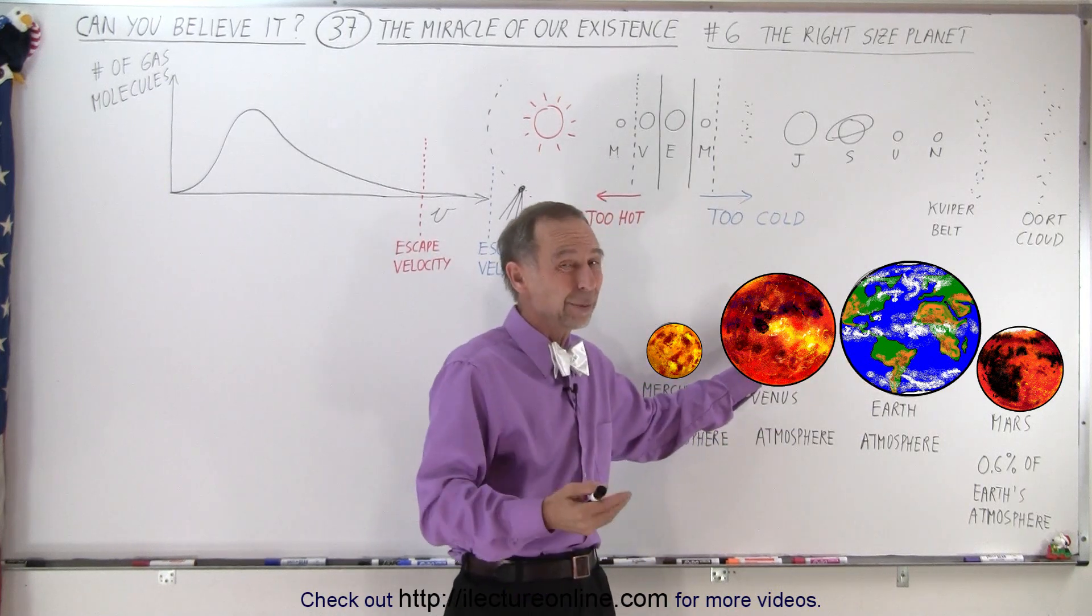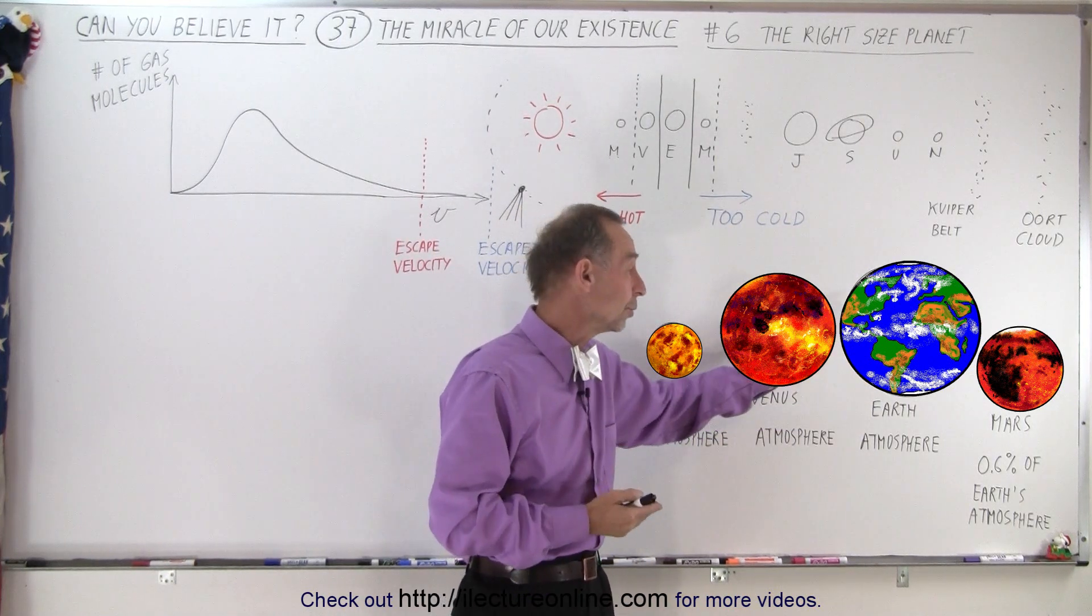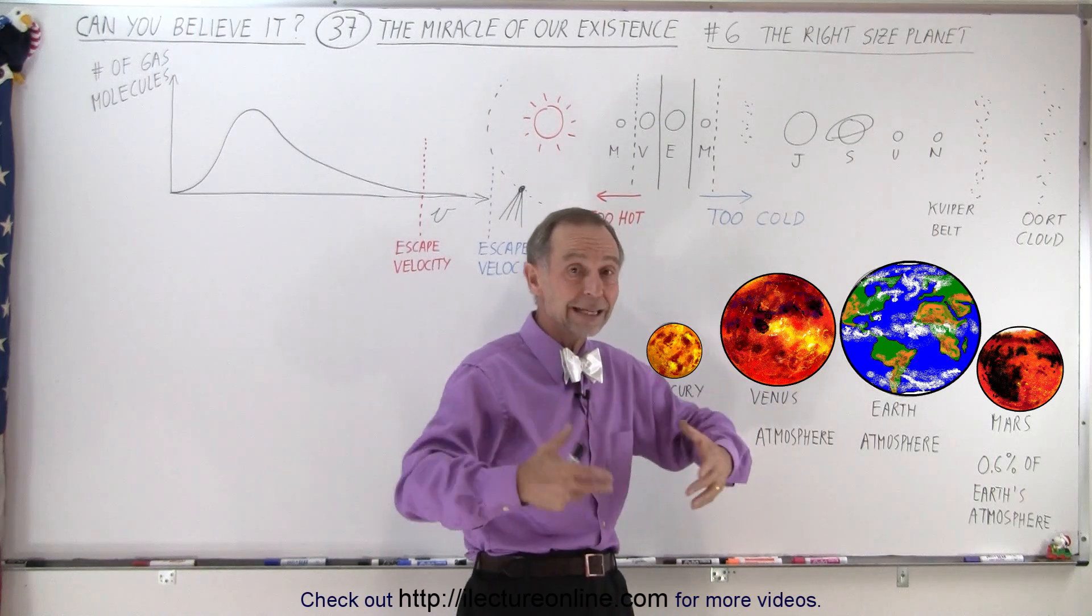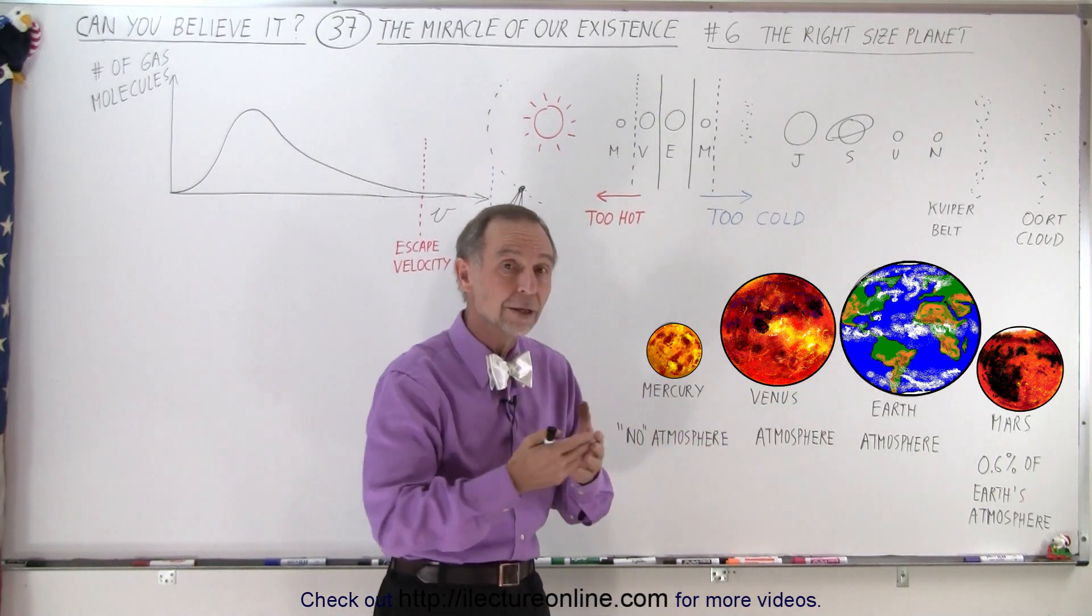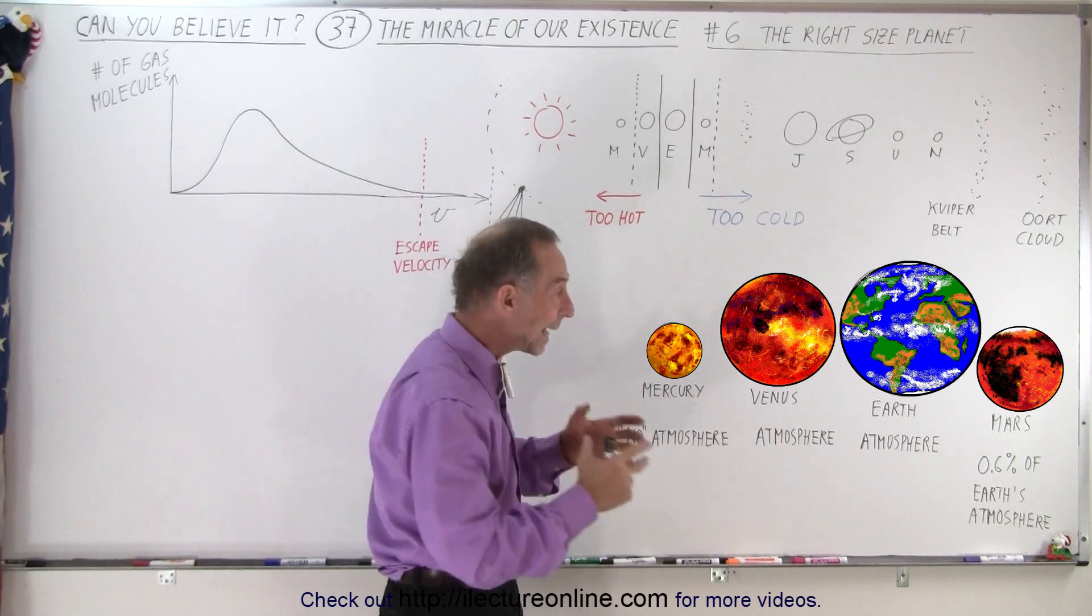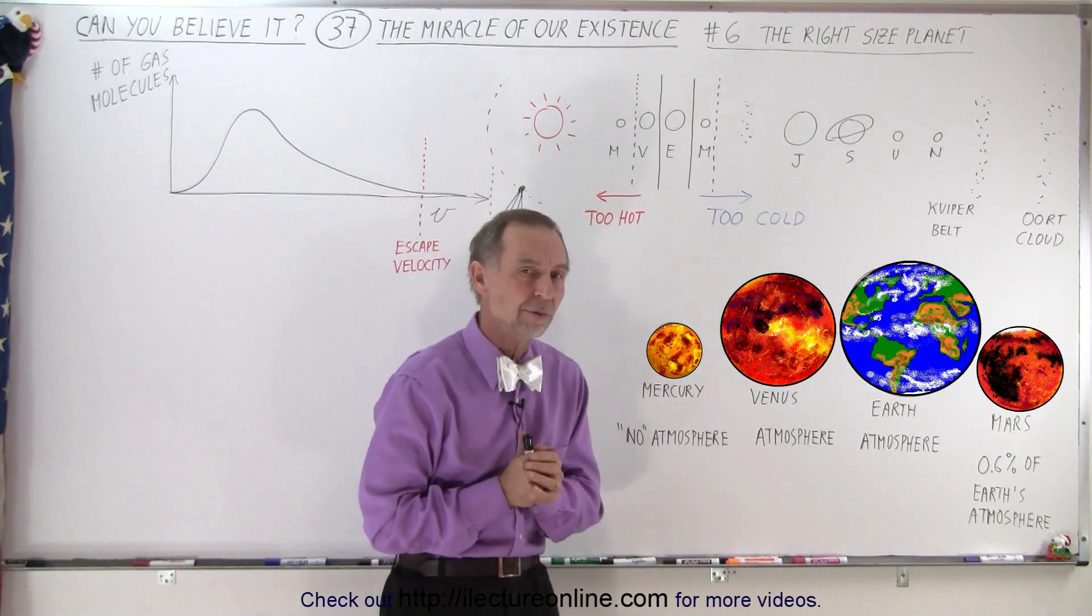So, Venus was the right size, but it was not in the correct Goldilocks zone, and Earth is the right size and in the Goldilocks zone. So of the four terrestrial planets, only one of them looks like it's in the right zone and it's large enough to hang on to its atmosphere.